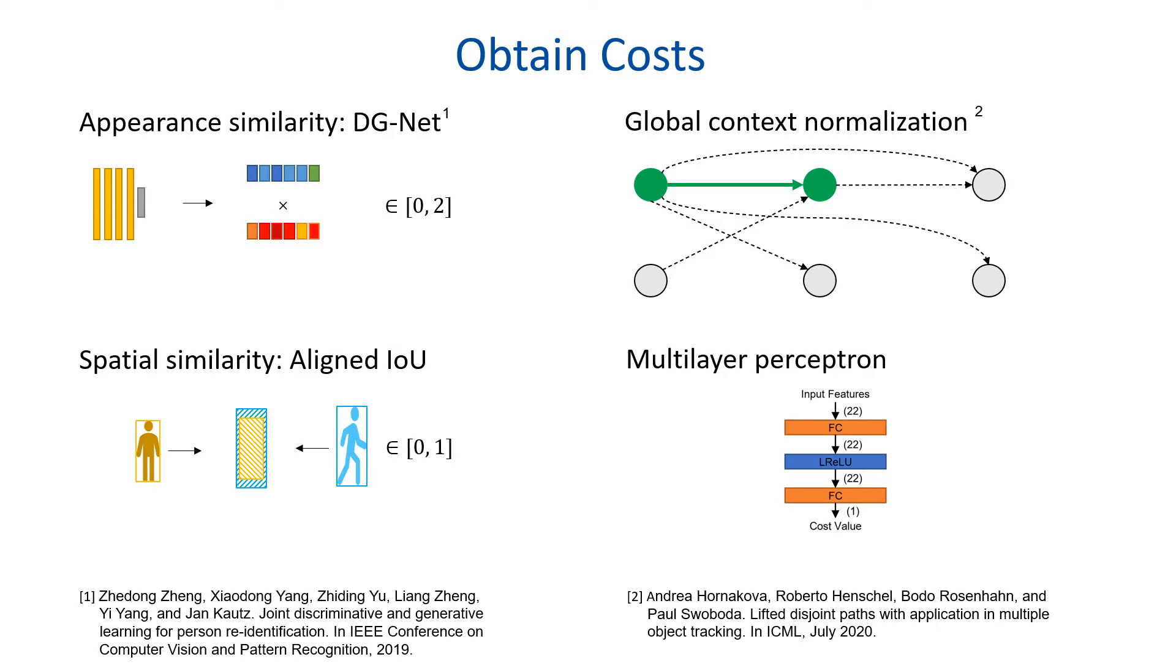Inspired by Honakover et al., we use global context normalization. For this, we define new relative similarities by normalizing the similarity values over all similarity values corresponding to outgoing edges, incoming edges, edges that end or begin in the same frame and overall edges. So we create 22 similarity scores which are finally passed to a trained and lightweight multilayer perceptron whose output is the cost value of the edge. We set the cost for base and lifted edges to the same value to reduce complexity.